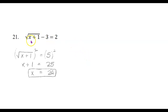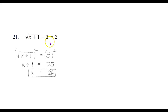One more of these: square root of x plus 1 minus 3 equals 2. Now here we do have to isolate the radical. We need the square root by itself on one side before we do any squaring of both sides. So first I get rid of the minus 3 that's not under the square root sign by adding 3 to both sides. Then I get the square root of x plus 1 equals 5. Now I can undo the square root by squaring both sides: x plus 1 equals 25.